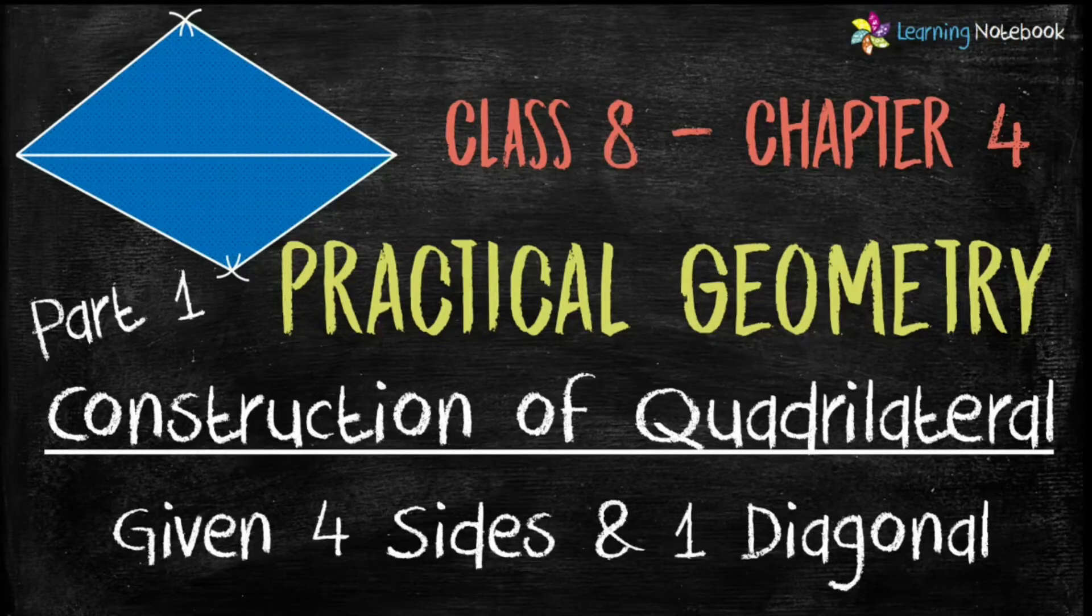In this part, we will learn how to construct a quadrilateral when the length of its 4 sides and one diagonal are given to us.